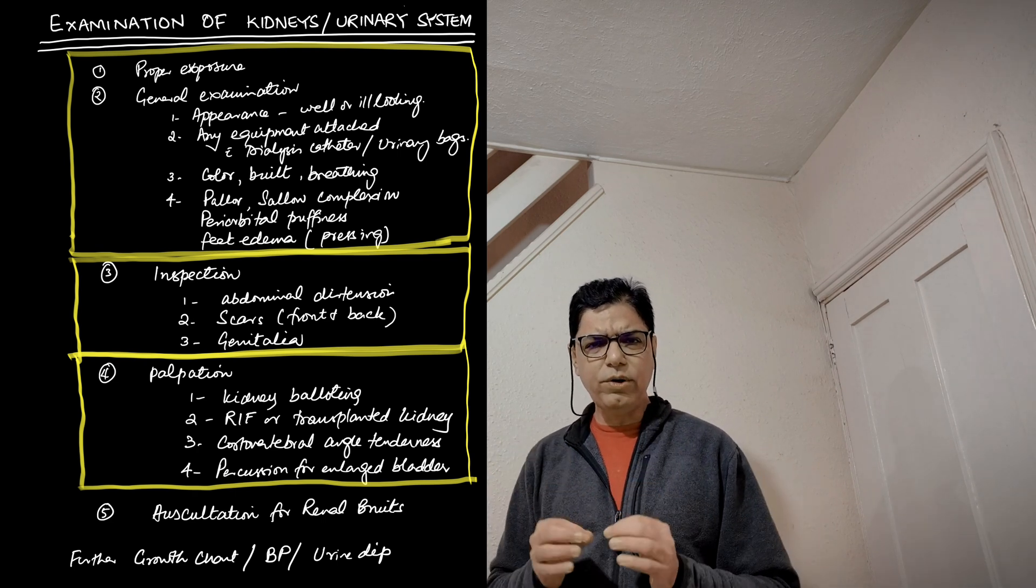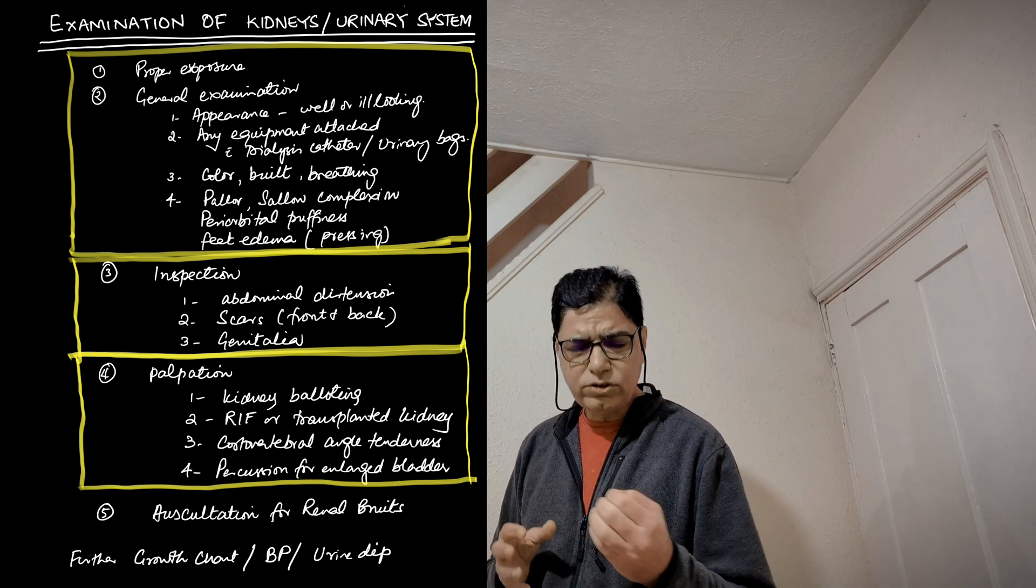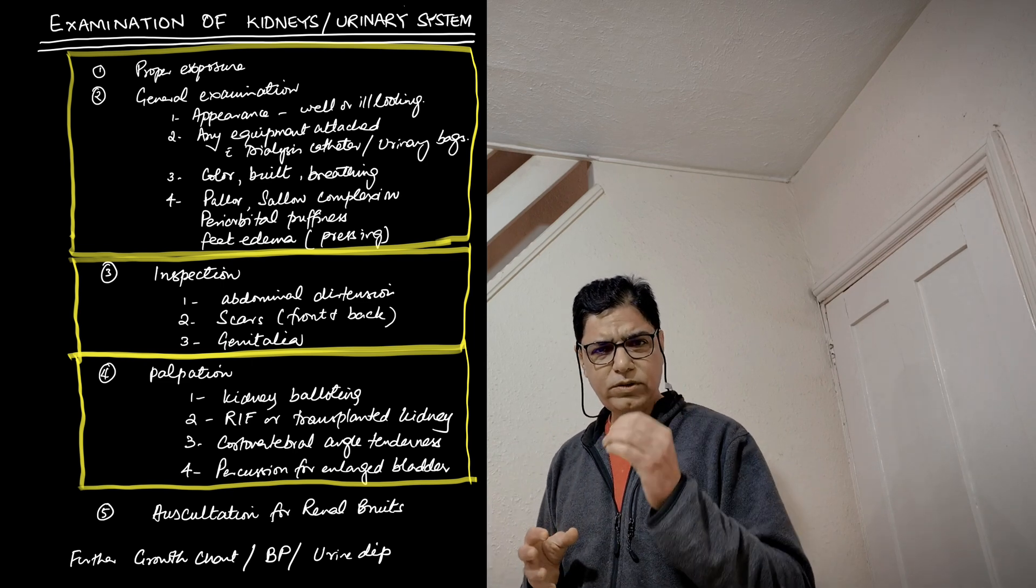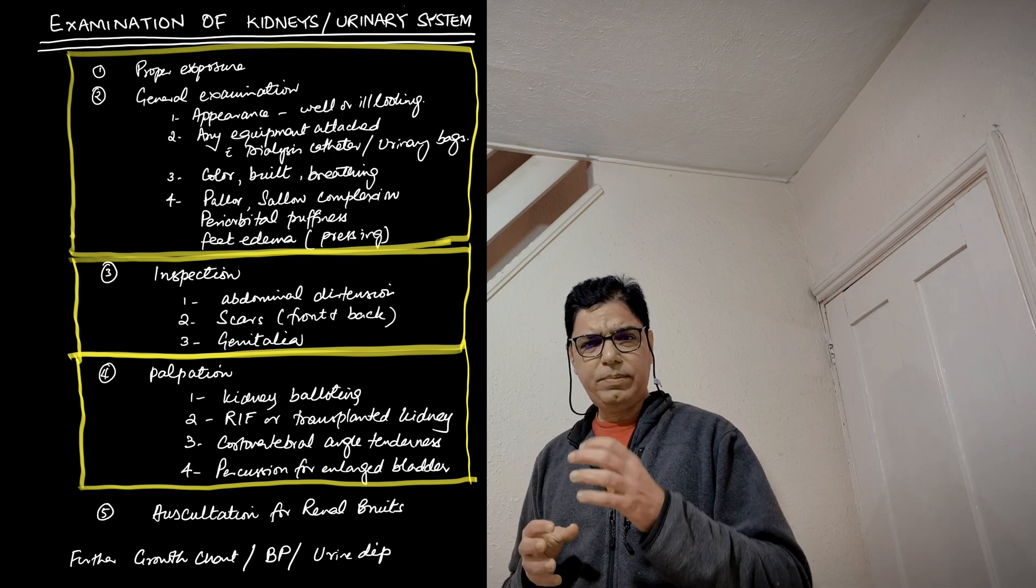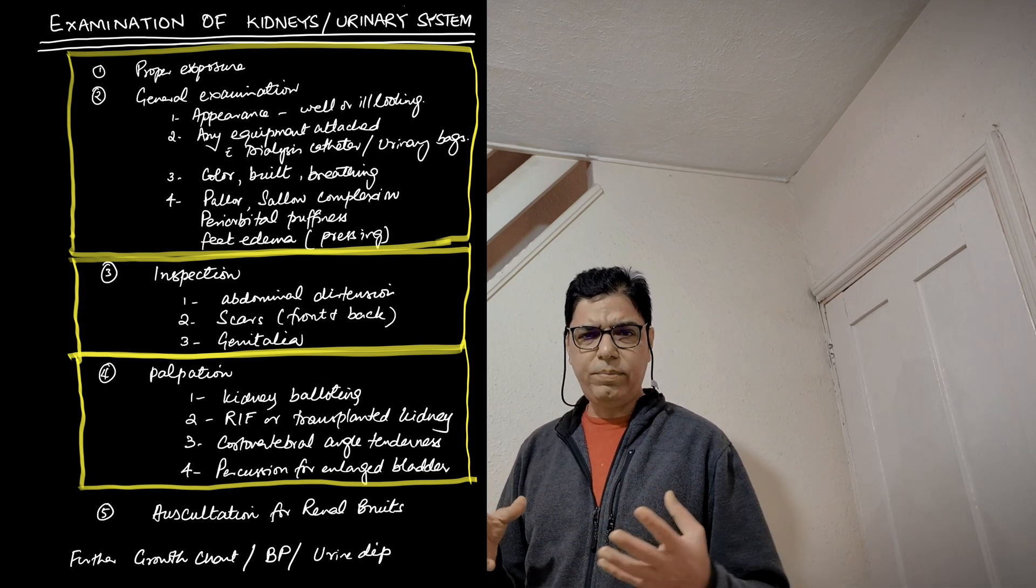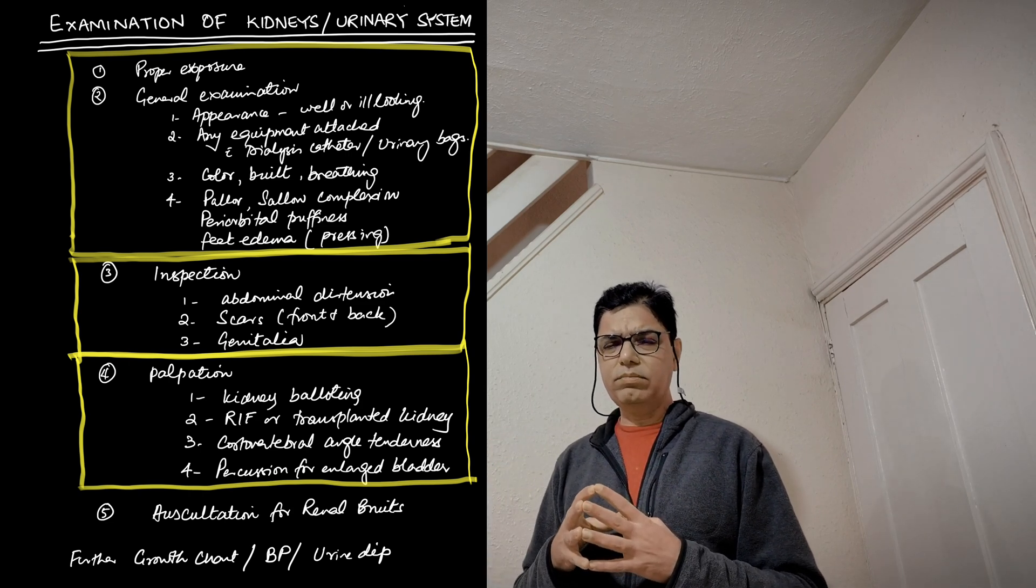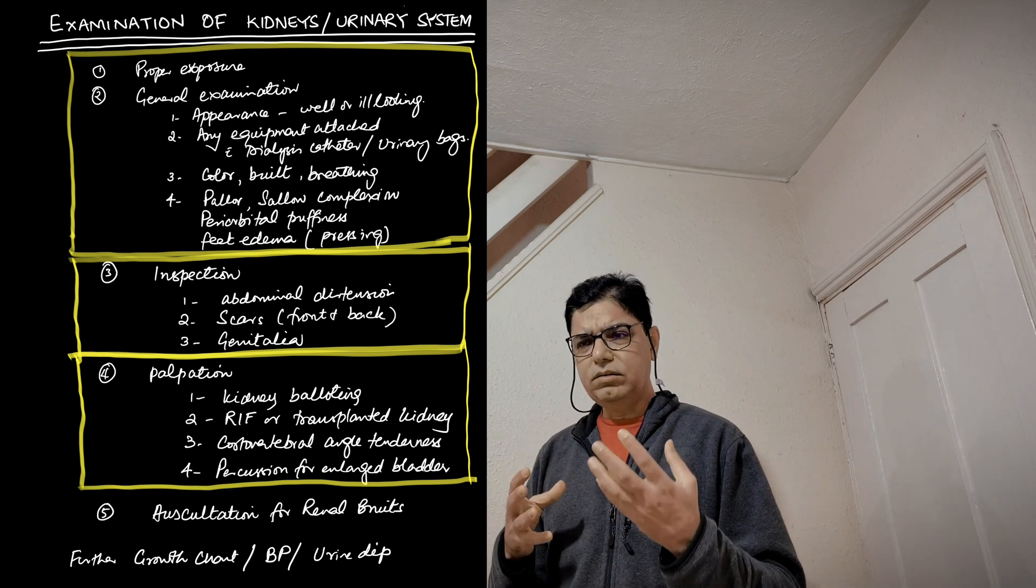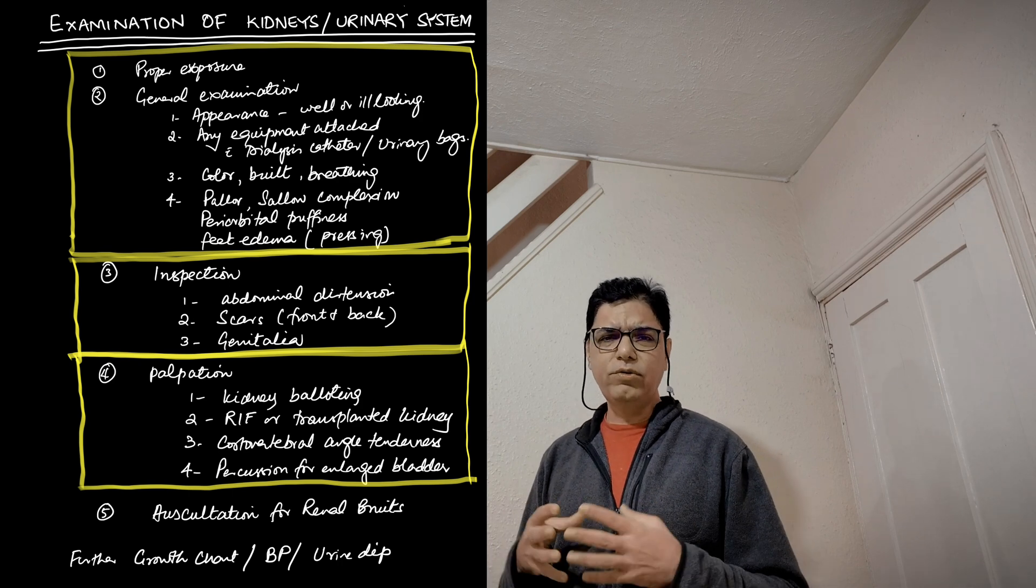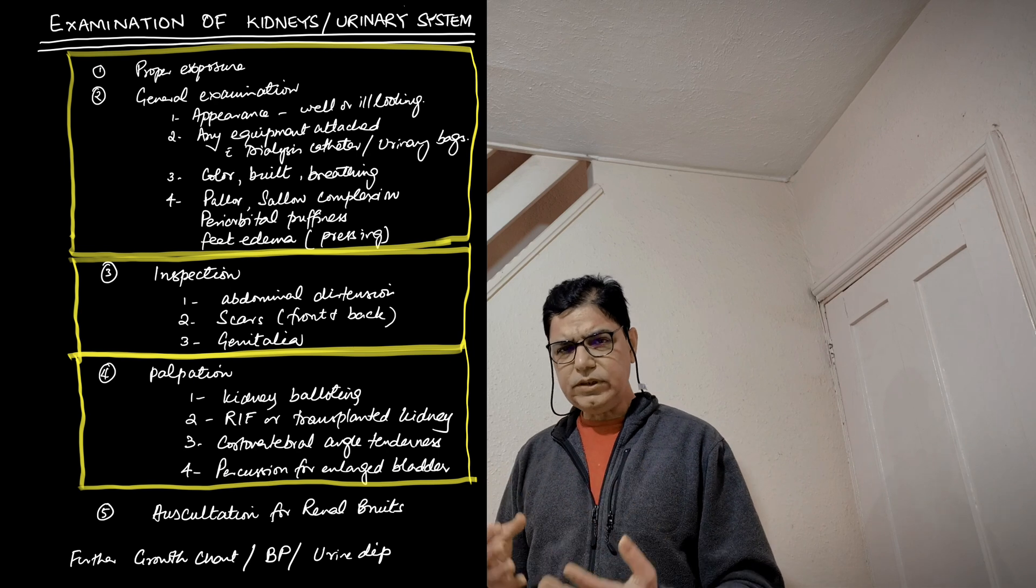This was a short video about how do you approach a station in which you are asked to do a urinary system examination. Remember, it always starts in summary: you do a general inspection in which you are looking at the appearance, the build, any equipment attached to the child, any periorbital puffiness, problems of the complexion like any pallor or cellar complexion. And then you move on to do inspection of the abdomen. You look for scars, you look for any abdominal distension.